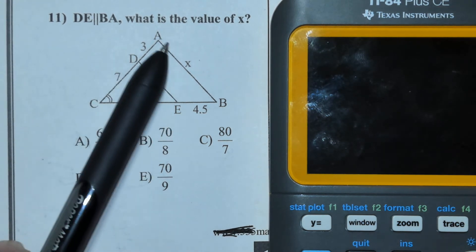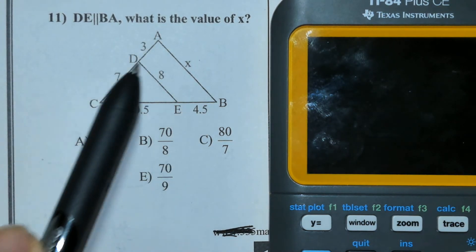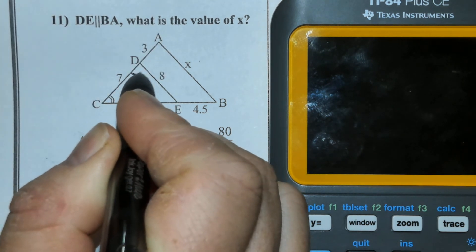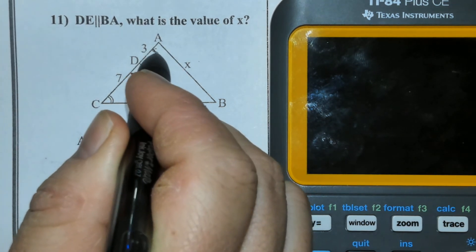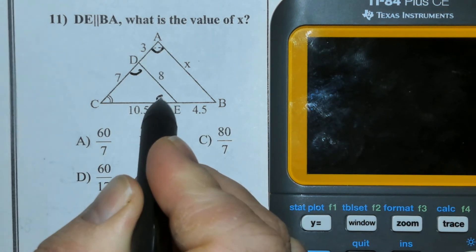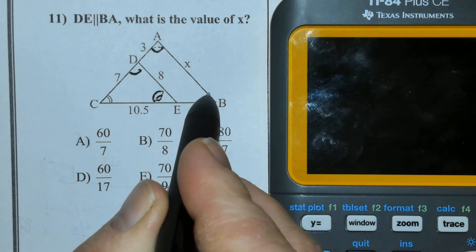In this problem, we're told DE is parallel to AB, which means angle CDE and angle CAB are equivalent, as well as CED and CBA.